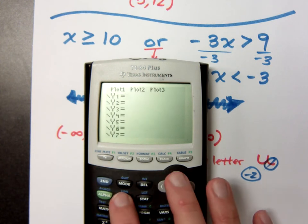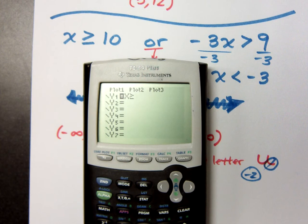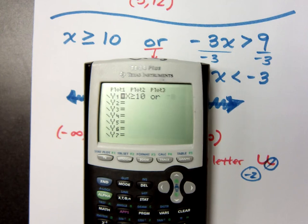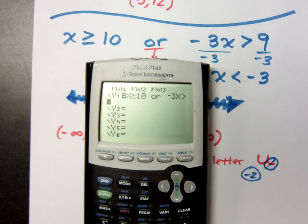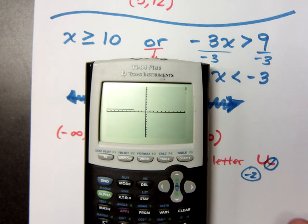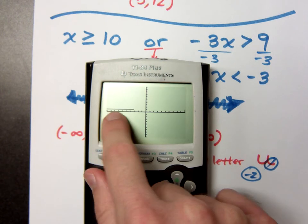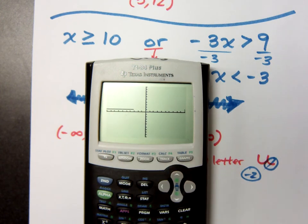So, if I graph x is greater than or equal to 10, and I go to OR, and I type in negative 3x, go back to your test to do greater than 9. Here's what your graph looks like. Now, you can't really see all of this, because the scale is kind of weird. This horizontal line right here, where y is equal to 1, that's telling me where it's true. Where you don't see that, it's telling me where it's false. So, in terms of logic and computers, 1 is true, 0 is false.